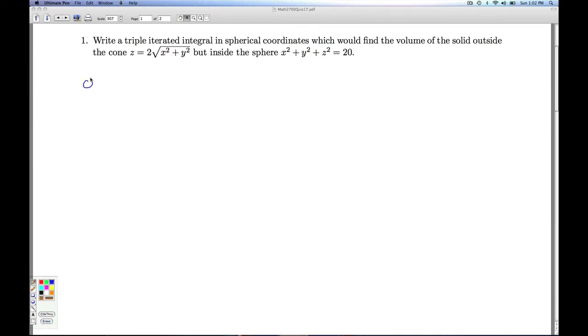All right. So in spherical coordinates, we have phi is the arc cotangent of 2, and we have rho equals 2 radical 5. Those are the equations in spherical coordinates. Now, I want the solid outside the cone, but inside the sphere. So I have a sphere like so, and then right there at the center, I've got this cone coming out. So I want the volume outside the cone. That is what I want.